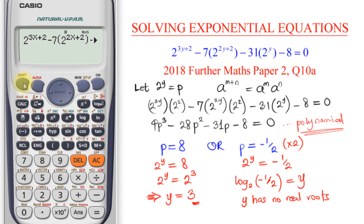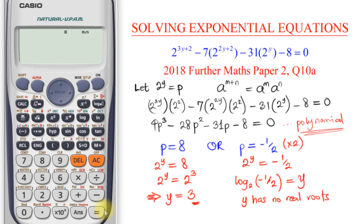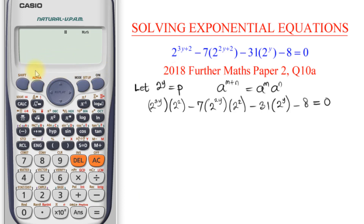Once I confirm the values are correct, I press shift-calc to solve for x. Understanding what initial value to choose is going to help you a lot. If I use zero as the initial value and press equal — knowing the answer is positive 3 — the calculator takes quite some time iterating.